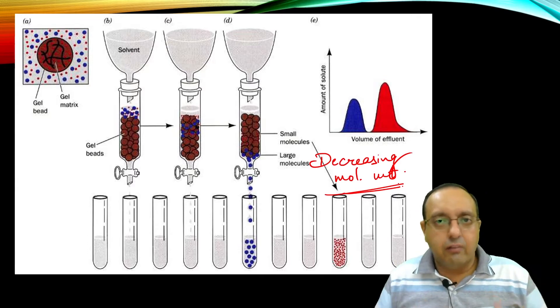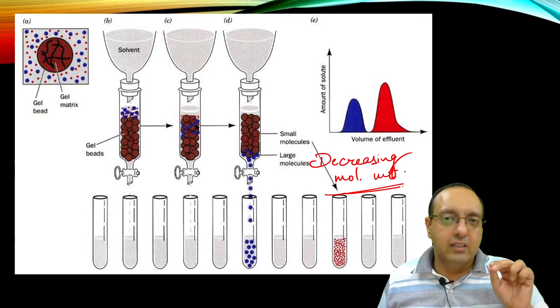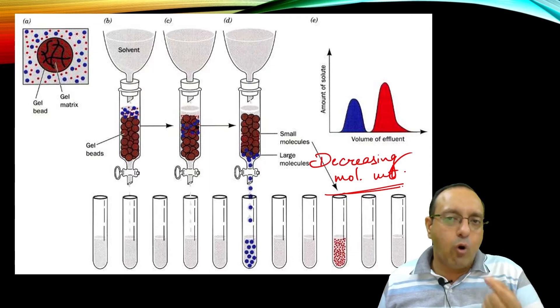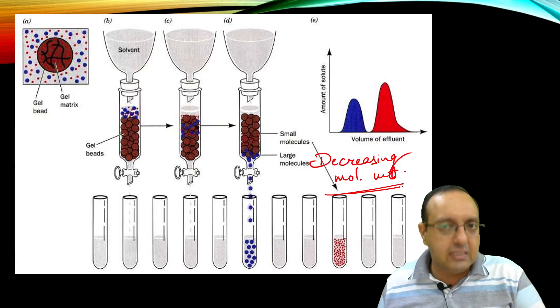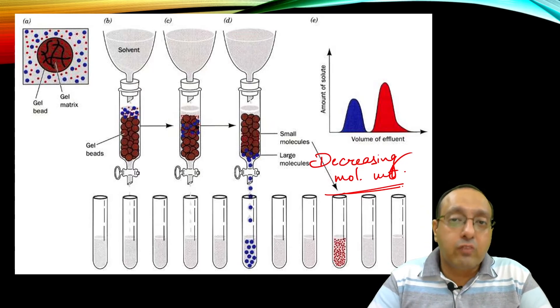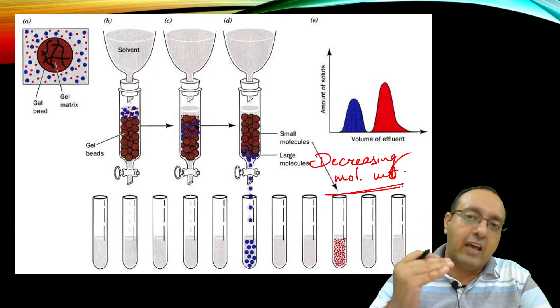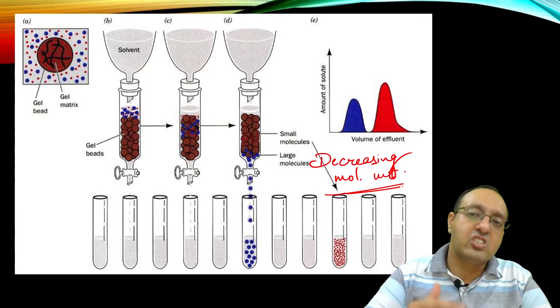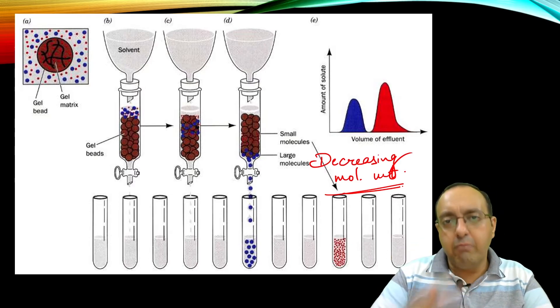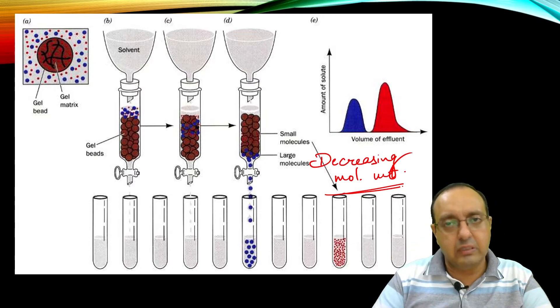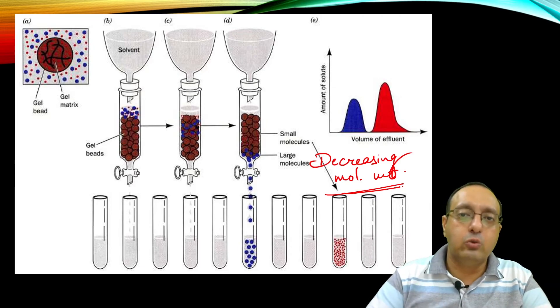This might not make usual sense, but if you think about it, very small proteins will enter the beads and remain in the column for a long time. They'll spend a lot of time in the column and elute out much later compared to very big proteins, which don't interact with the beads at all and elute out very fast.